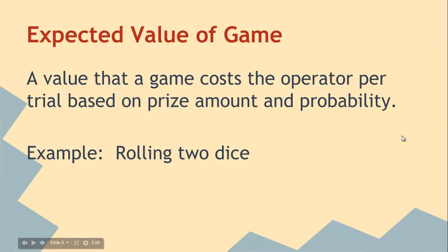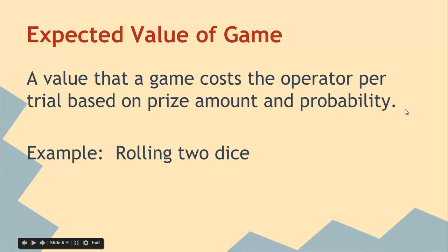We're going to develop an understanding of where that charge comes from and how that works — today and over the semester. So what that is is the expected value of a game: a value that a game costs the operator per trial based on prize amount and probability. The expected value is how much it's actually going to cost the casino to run the game — how much value there is to the customer, to the person gambling, and how much they're going to win each time.